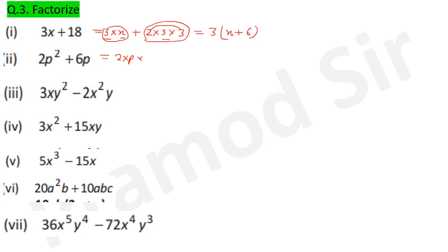Question 2: 2p×p + 2×3×p. What is common: 2p. Take 2p as common; what is left: p from the first term and 3 from the second. So the answer is 2p(p + 3).